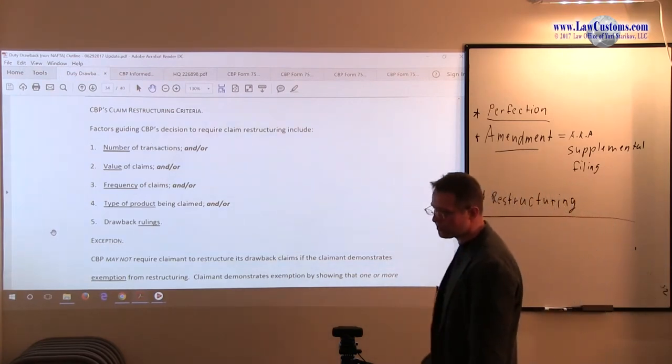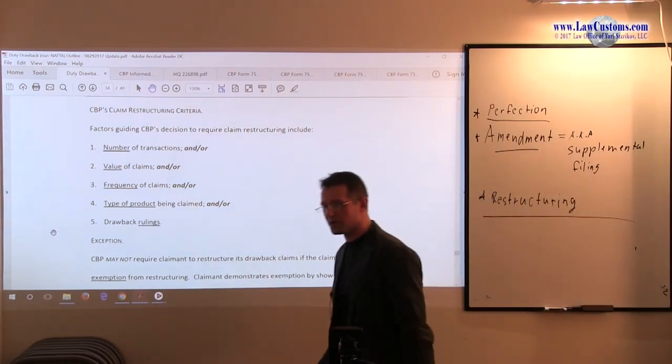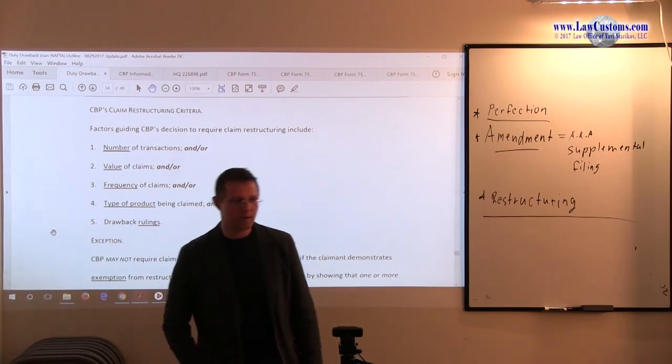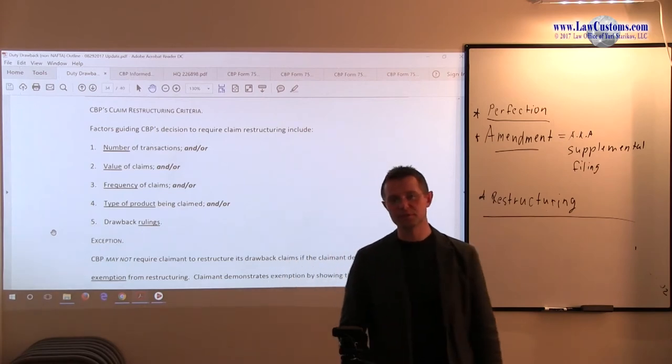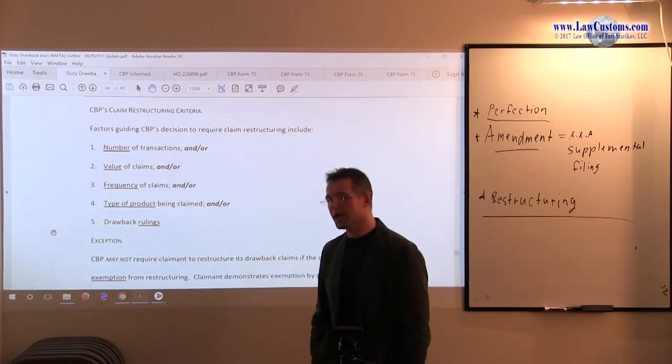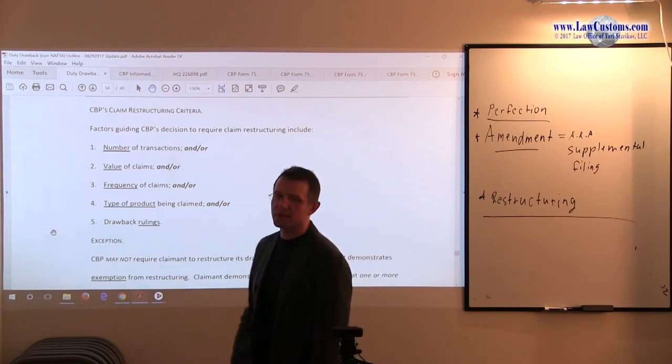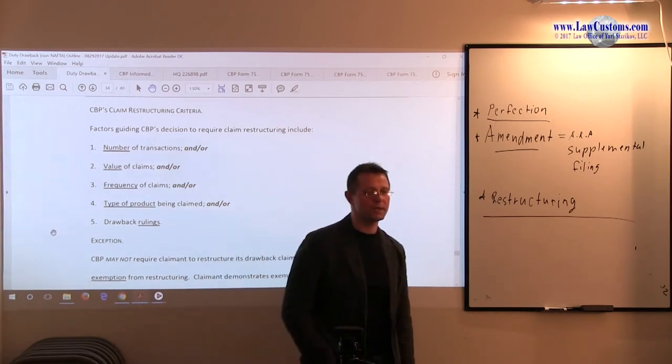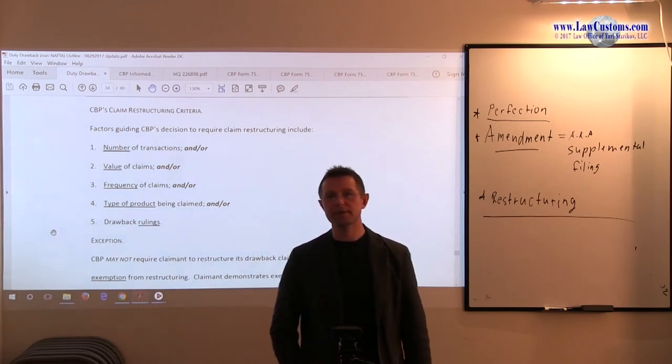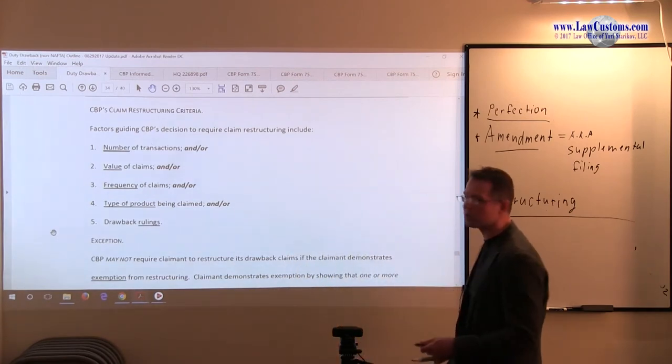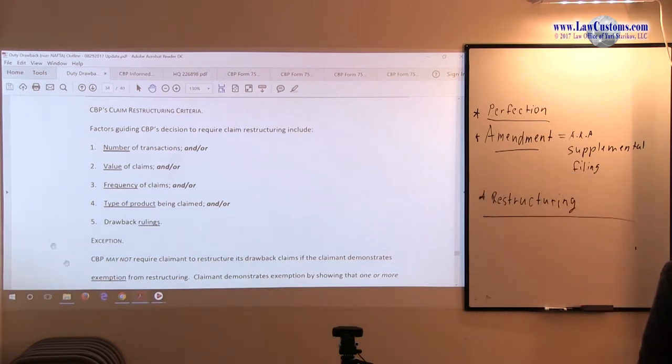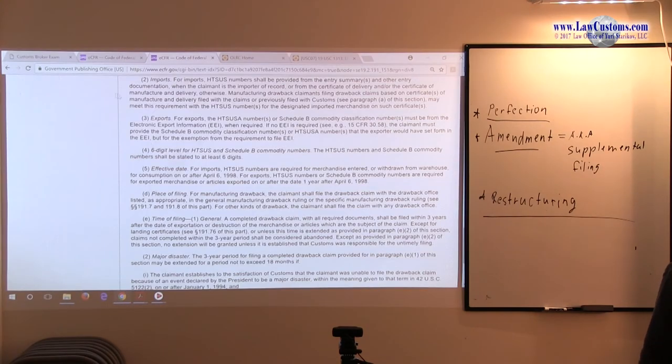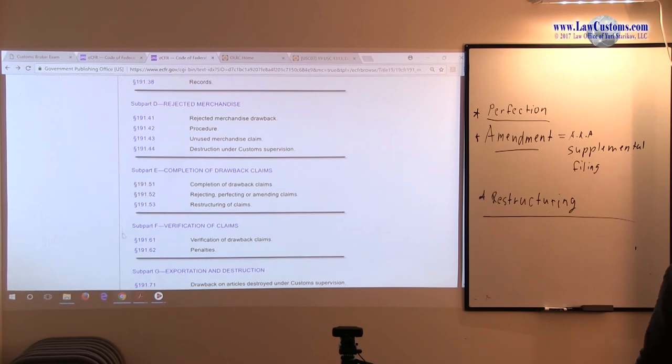Because we live in a world of rules and regulations, of course customs cannot decide this for whatever reasons. There is a set of reasons why customs may want to do that, and there is a set of reasons that drawback claimants can respond with by saying no. And this is the point of claim restructuring: what is the guiding criteria?